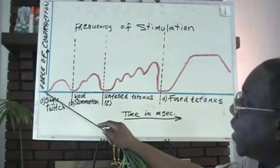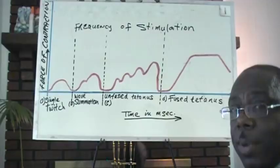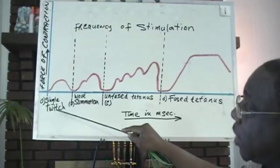First definition is a twitch. What is a twitch? A twitch is a single contraction reaction to a single stimulus. So one stimulus will cause one reaction. That's a twitch.